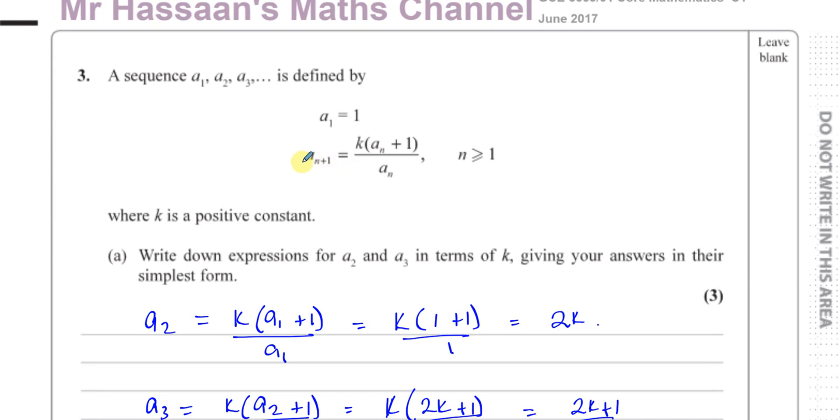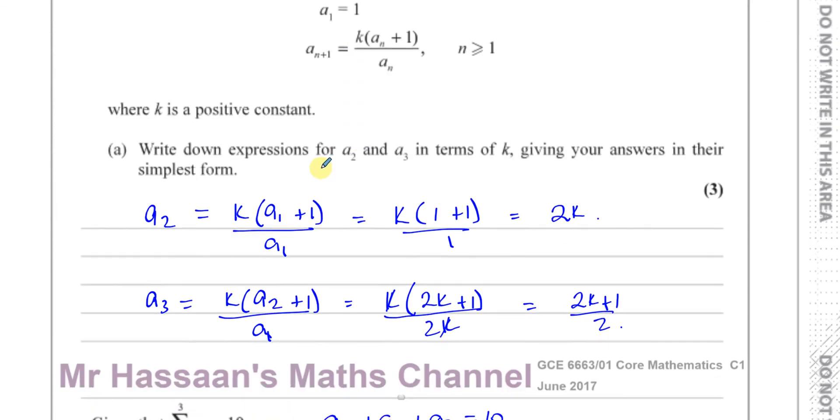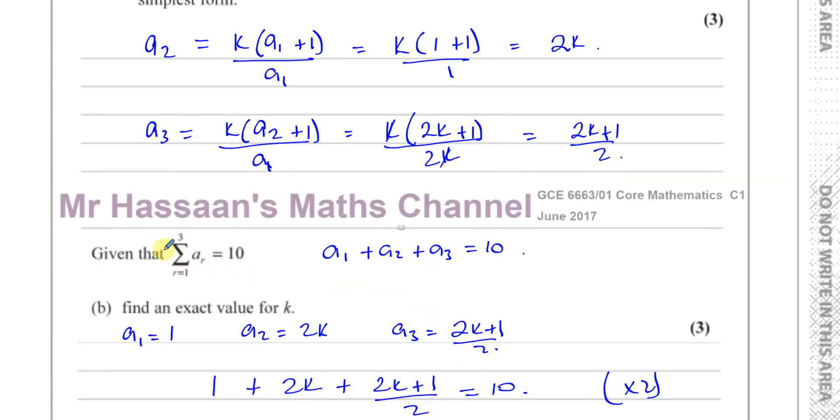So this is a recurrence relationship question and this recurrence relationship tells you how to continue the sequence given previous term. So the next term is k times the previous term plus 1 over the previous term and that's how you can generate the next term and term after that. And this is sigma notation, means the sum of the terms from 1 to 3, a1, a2, a3 is equal to 10.